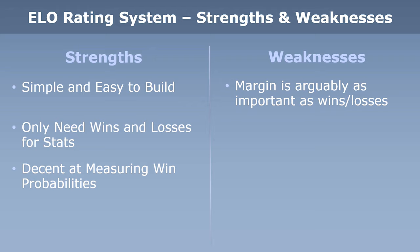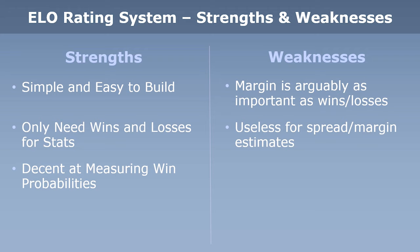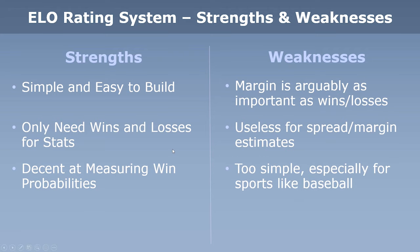But there are weaknesses. Margin is arguably as important as wins and losses — many argue it's more important to determine which team is better. For example, which is better: a team that wins every game by one point, or a team that wins 18 of 20 games by 50 points but lost two by one? The ELO system treats that first team as more dominant, and that can be a problem. Second, it's useless for estimating the spread or margin. If you're trying to bet against a spread, ELO is not for you — it's really only for money lines. And it's too simple, especially for sports like baseball. But the simplicity is a good thing to help you learn the core concepts of power ratings.